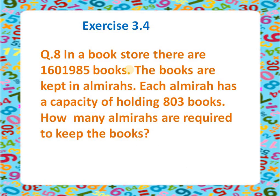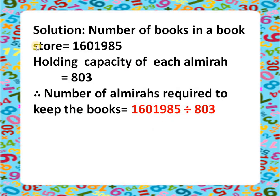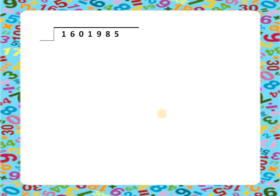Let's write the solution. The number of books in the bookstore is 16,185. The holding capacity of each almira is 803. We need to find the number of almiras required to keep all the books. We will divide these two numbers to find the exact number of almiras needed. Let's set up the division bracket with dividend 16185 and divisor 803.